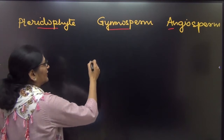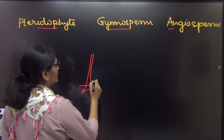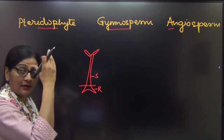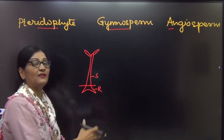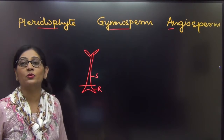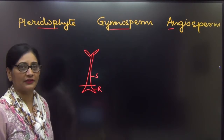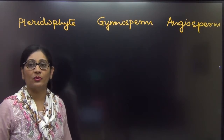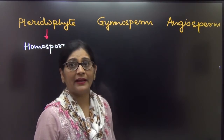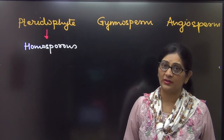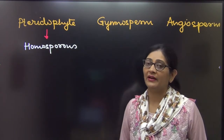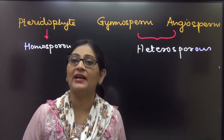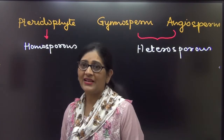A sporophyte is that plant body where the plant is distinguished into root, stem, and leaf. When a plant has root, stem, and leaf distinguished, that form is called the sporophytic phase. So in all three — pteridophyte, gymnosperms, and angiosperms — the main plant body is a sporophyte. But in pteridophytes, the plants are mostly homosporous — they form only one type of spore. Whereas in gymnosperms and angiosperms, the plants are heterosporous, meaning they form two types of spores.